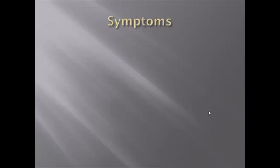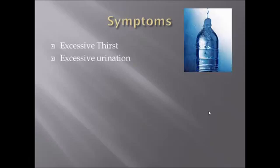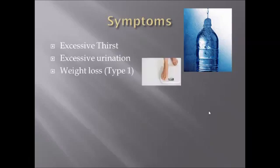Diabetes has a wide range of symptoms. Two of the most obvious signs early on in the disease process are going to be excessive thirst and excessive urination. These two symptoms tend to be obvious to family and friends of the diabetic individual. Another symptom more specific to type 1 diabetes is weight loss. Unintentional weight loss may indicate a more serious disease such as diabetes, thyroid disorders, or cancers.